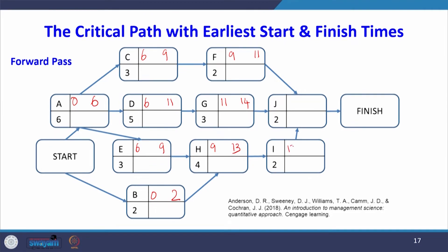Then 13 + 2 = 15. For activity J, there are three ways — from F, G, and I — the largest is 15, so 15 + 2 = 17. For this project, the total time taken to complete all activities is 17 weeks. The top values represent earliest starting time and the bottom values represent earliest finishing time.